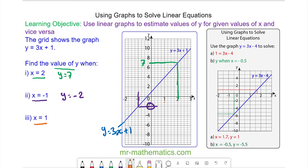So when x equals 1 we draw a vertical line to the blue line and a horizontal line to the y-axis and you can see when x equals 1 y is equal to 4.